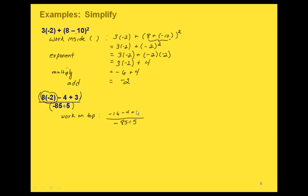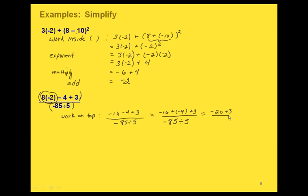So we have negative 16 minus 4 plus 3. Now we have a subtraction and an addition, so we work left to right. Rewriting the subtraction as an addition: negative 16 plus negative 4 gives us negative 20. And finally, adding negative 20 and 3 gives us negative 17. So everything on top of the fraction bar simplifies to negative 17.